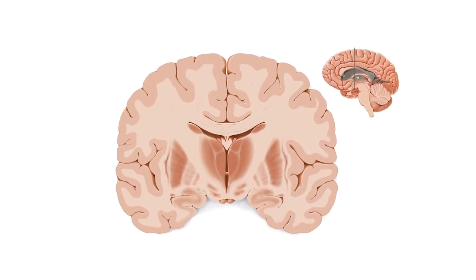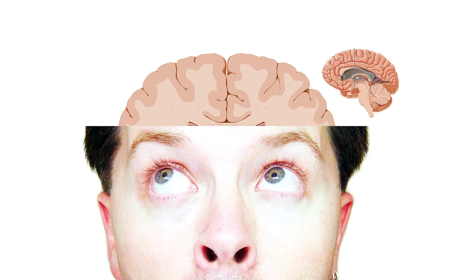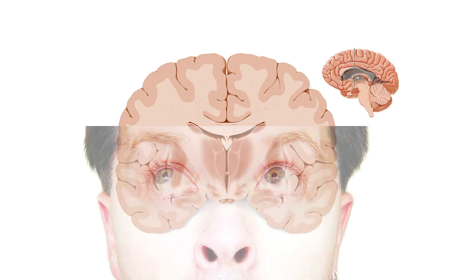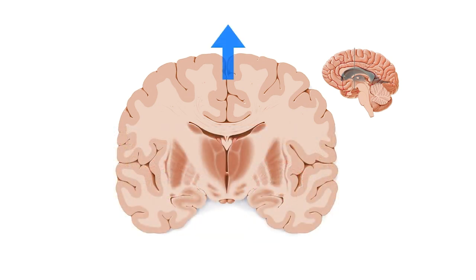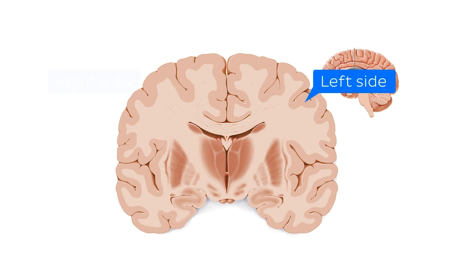But firstly, let's get oriented. Remember, we're looking at the brain as if we're standing in front of a person looking at their face. This is superior, and this is inferior. This, of course, is the midline of the brain, and these are the left and right sides, which are opposite to the viewer's, since the subject is looking towards us.